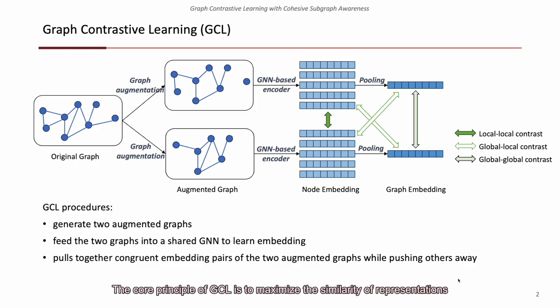The core principle of GCL is to maximize the similarity of representations between augmented graphs derived from the same original graph, enabling the learning of an effective GNN encoder. Consequently, augmentation strategies play a vital role in the success of GCL.